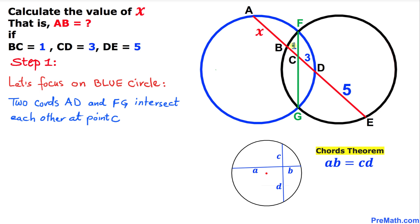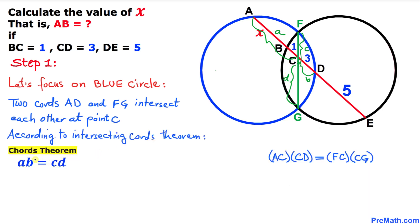Now we apply this theorem to the intersecting chords inside the blue circle. I'm going to call part AC lowercase a, part CD lowercase b, part FC lowercase c, and part CG lowercase d. Applying the intersecting chords theorem: in our case, a is x plus 1, and b is 3, so we get (x + 1) times 3 equals c times d.